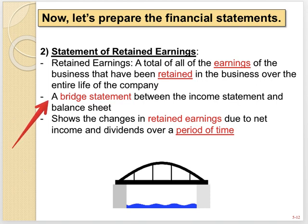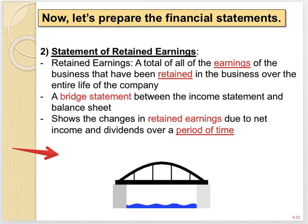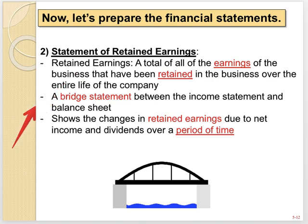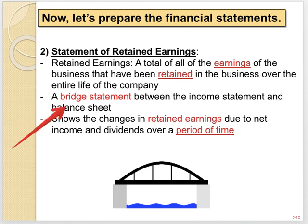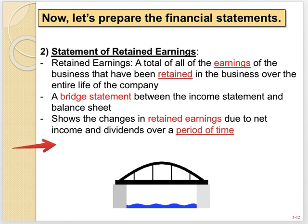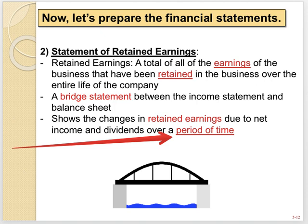I personally call this a bridge statement because it bridges the gap between the income statement and the balance sheet. There's information on the income statement that we need for this statement of retained earnings in order to then prepare the balance sheet. This statement in and of itself isn't that informative, but you need it to get from one informative statement — the income statement — to another informative statement — the balance sheet. The purpose of the statement of retained earnings is that it shows the changes in retained earnings due to net income and dividends over a period of time.